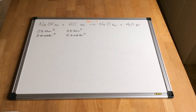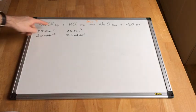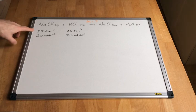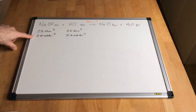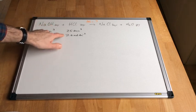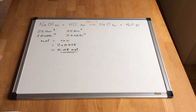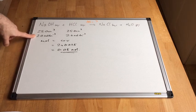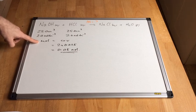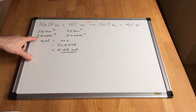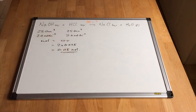The second example involves the reaction between two aqueous solutions: sodium hydroxide solution reacting with hydrochloric acid — a classic neutralisation reaction. We have 25 cm³ of 2 moles per decimetre cubed sodium hydroxide reacting with 25 cm³ of 2 moles per decimetre cubed hydrochloric acid. Since both solutions have the same concentration and volume, the moles are the same: concentration times volume gives 0.05 moles of sodium hydroxide and 0.05 moles of hydrochloric acid.